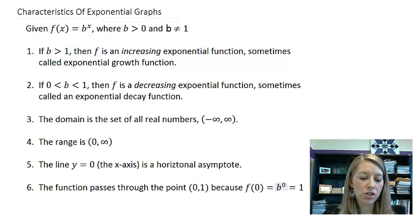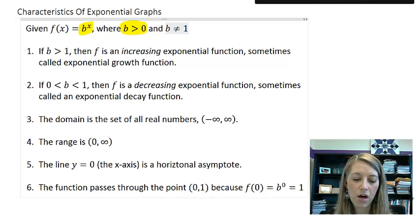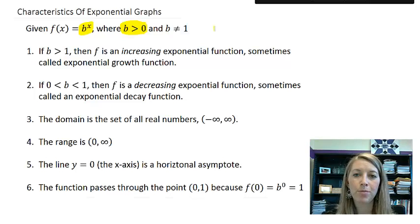So again, the definition is where we have a base to some exponent where x is in the exponent and the base is a constant number. Our base has to be greater than zero, so we know it's defined for all numbers. And our base cannot equal one because if so, it would just be a constant function.